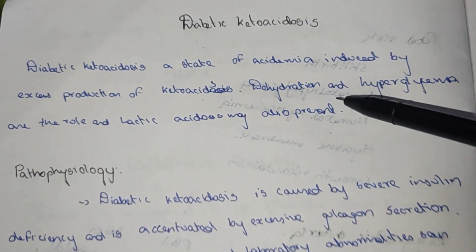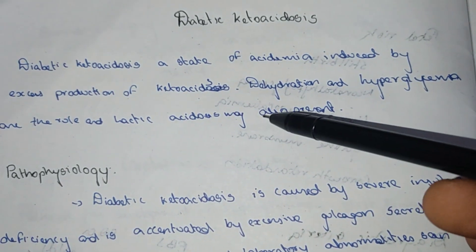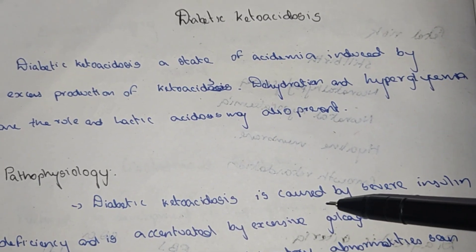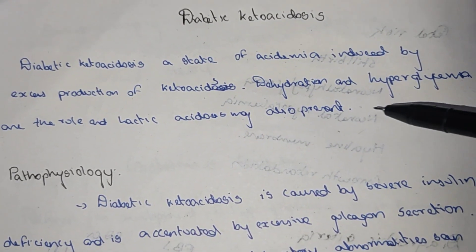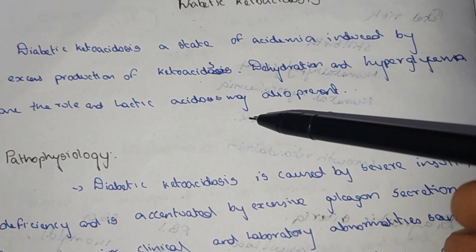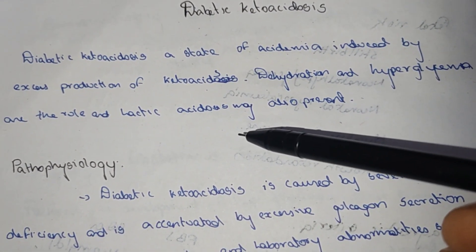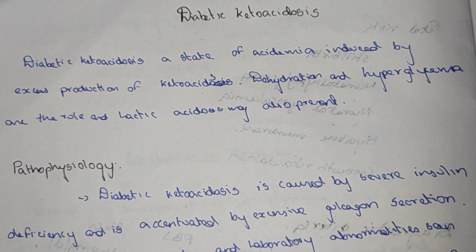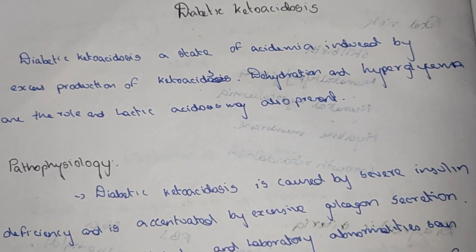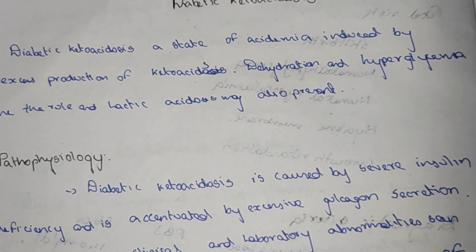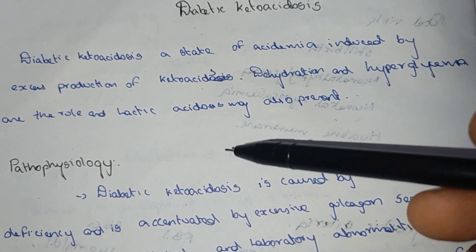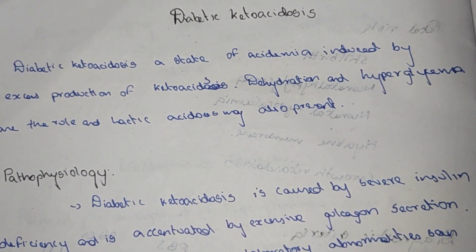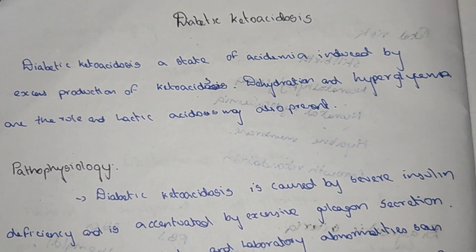Diabetic ketoacidosis is a state of acidemia induced by excess production of ketoacids. Dehydration and hyperglycemia are the rule, and lactic acidosis may also be present. This is why you have elevated blood sugar levels and lactic acidosis present in diabetic ketoacidosis.